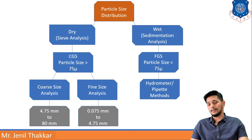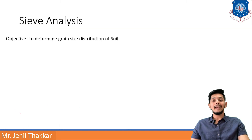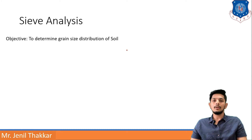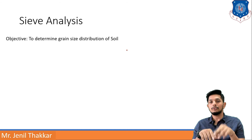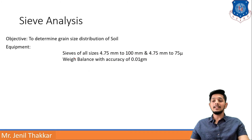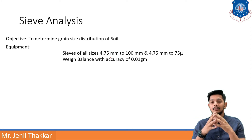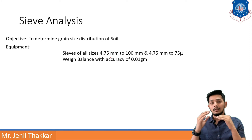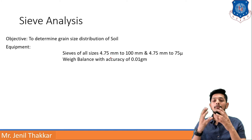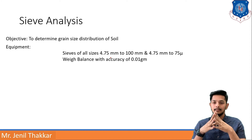This is the basic flowchart of this chapter. Moving further into dry analysis as sieve analysis: the objective of sieve analysis is to determine grain size distribution of soil. Equipment required is sieves of all sizes from 4.75 mm to 100 mm — Indian standard specified sizes. A second range for fine size analysis requires sieves from 75 micron to 4.75 mm. You also need a weight balance with accuracy of 0.01 grams.